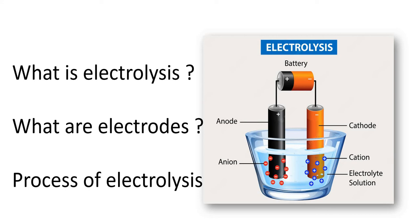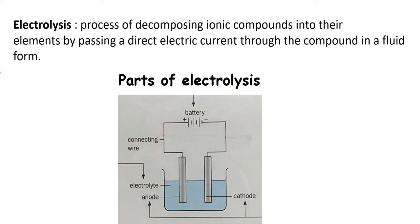In this video I am going to talk about electrolysis — what it is, what electrodes are, and the process involved. The term 'lysis' means breakdown. In biology, cell lysis means breakdown of cells. Here, a solution is broken down with the help of electricity. Electrolysis is a process of decomposing — breaking down — an ionic compound into its elements by passing a direct current (DC) through the compound.